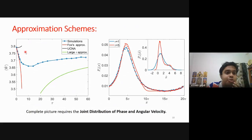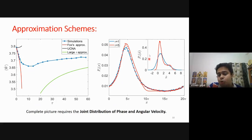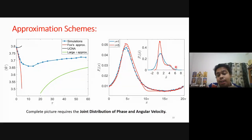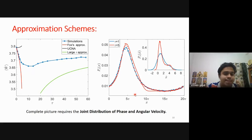We found that UCNA does not capture the behavior in this problem, whereas the Fox approximation works for a particular range of correlation times. In the figure of the phase distribution, for low correlation time where Fox approximation works, the angular velocity distribution is close to Gaussian. When the angular velocity distribution deviates from Gaussian, the Fox approximation fails. This is because the complete picture requires the joint distribution of phase and angular velocity. Our large-tau approximation clearly captures the increasing behavior in the system.